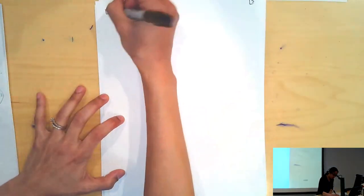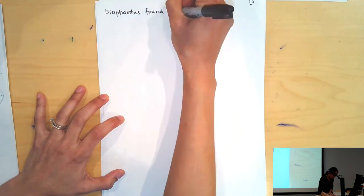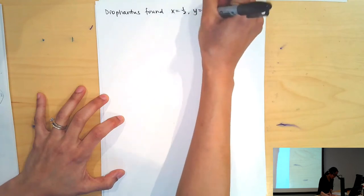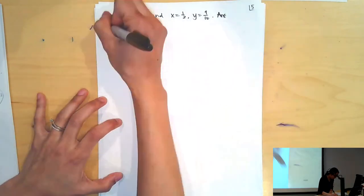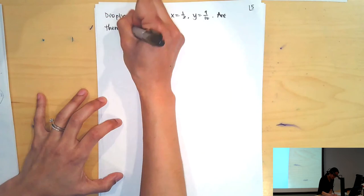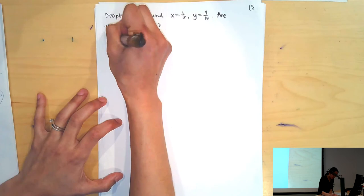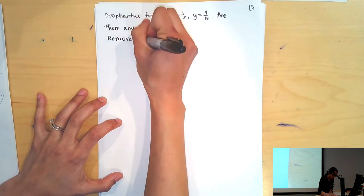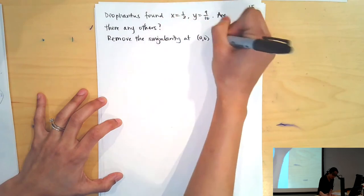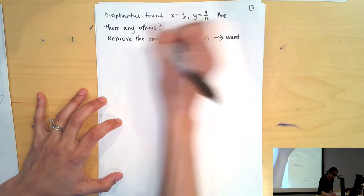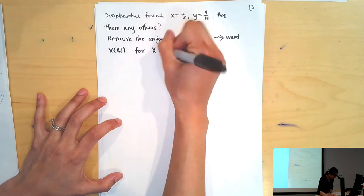In other words, can we find positive rationals x, y such that y² = x^8 + x^4 + x²? Diophantus found the solution (1/2, 9/16). From Diophantus' point of view he was happy, he was done, but of course we'd like to know are there any others?